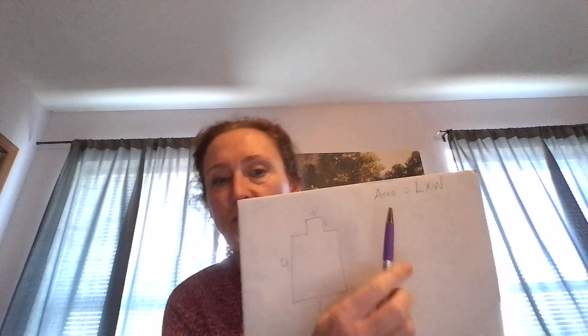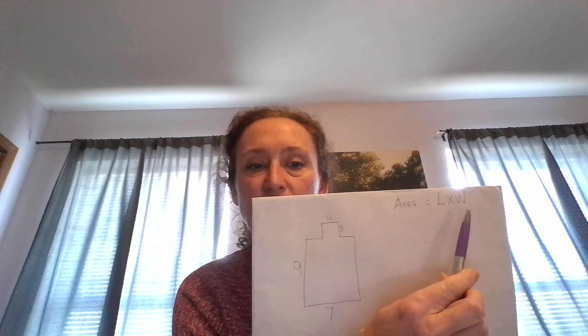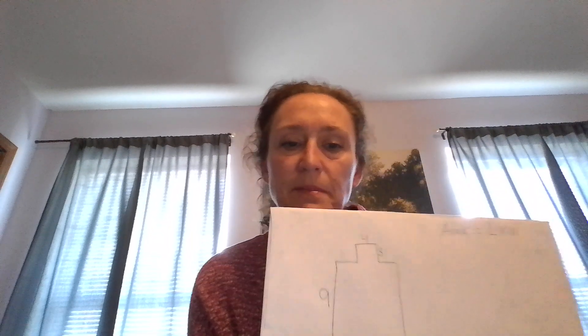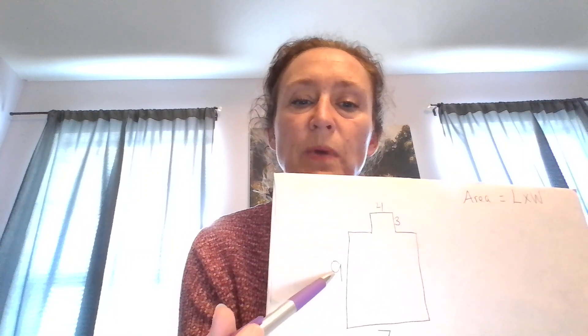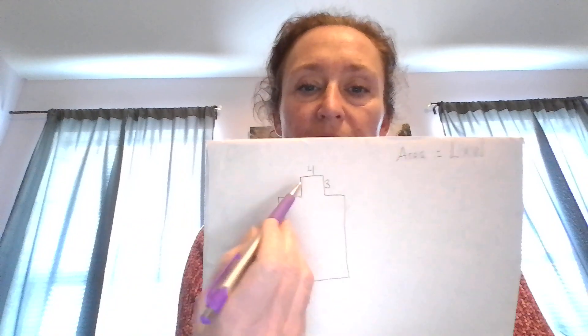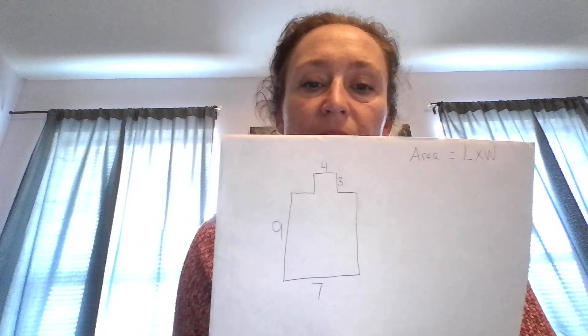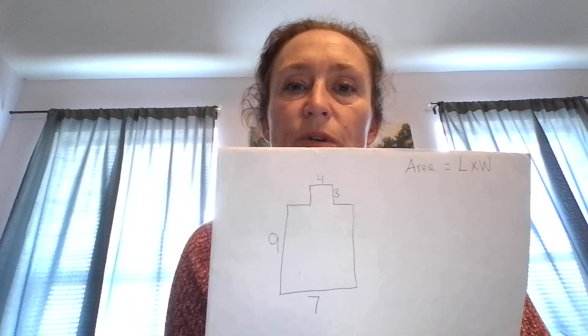So here you can see that we have this shape. At the top we have area equals length times width. But when you have a shape like this, you have a side here that is nine and a side here that is seven, but then you also have a side up here at the top that's a four and a three. So it's like we have two rectangles together — you can't just multiply length times width because which length times which width? In a shape like this, you simply want to break the shape into two smaller rectangles. This shape is a bit easier because it's pretty obvious where you would break it.